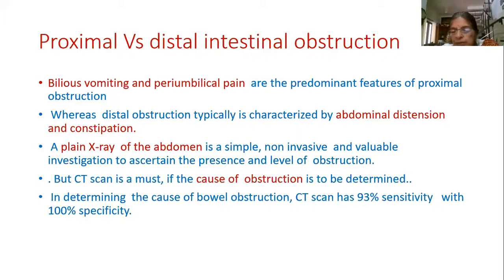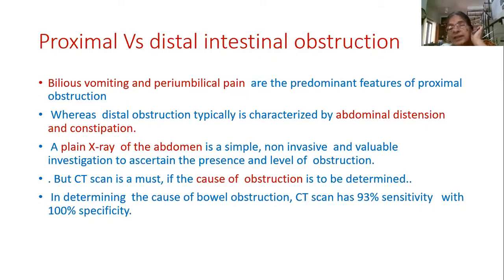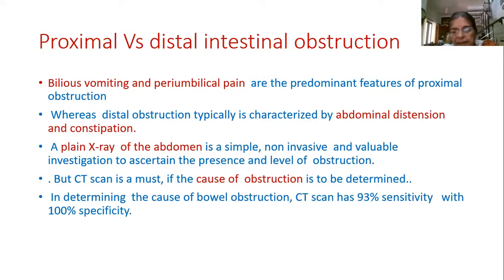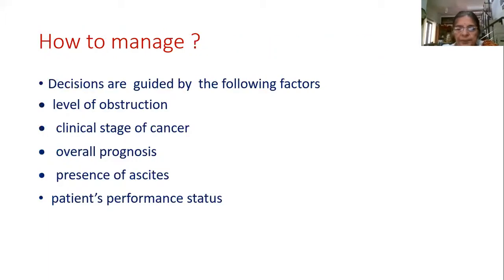Obstruction can be proximal or distal in the intestine. Proximal obstruction presents predominantly with bilious vomiting and periumbilical pain. Distal obstruction presents mainly with abdominal distension and constipation. A plain X-ray of the abdomen is simple, non-invasive, and inexpensive for confirming obstruction. A CT scan is needed to determine the cause of obstruction.